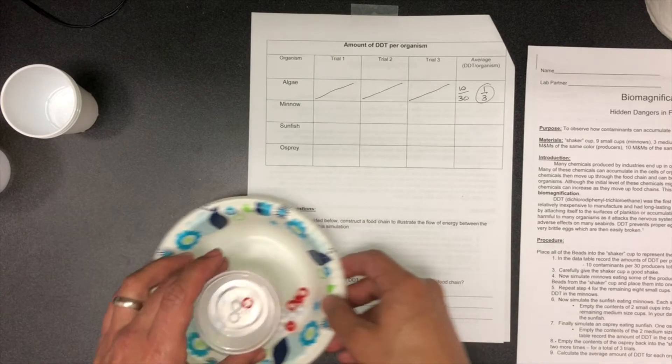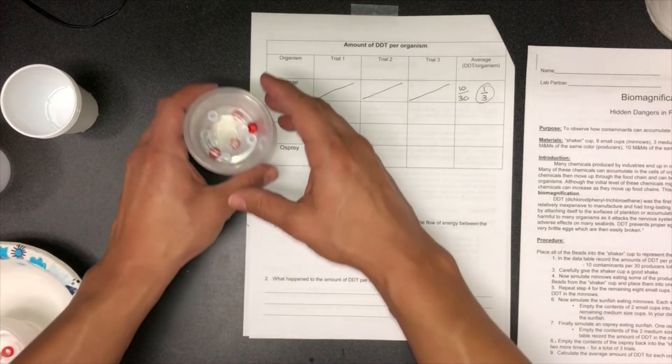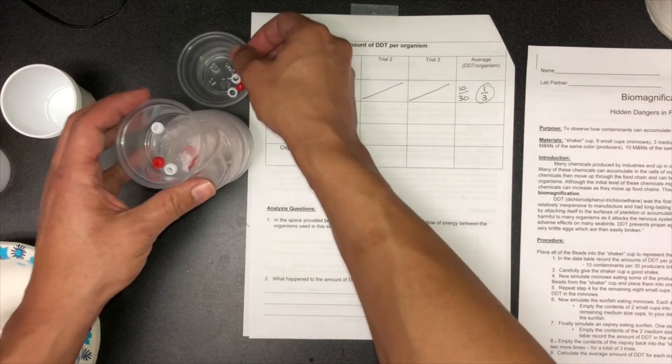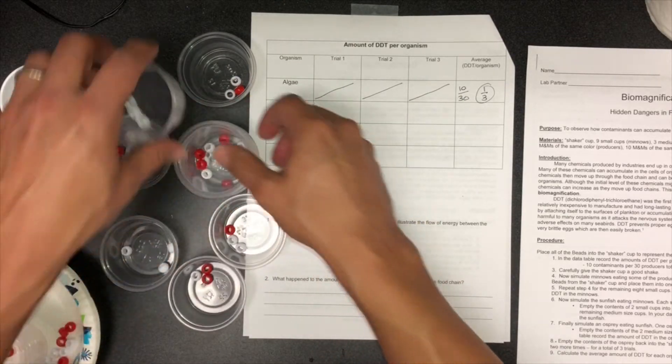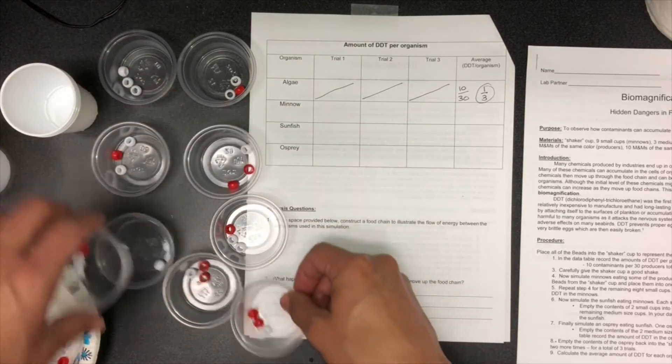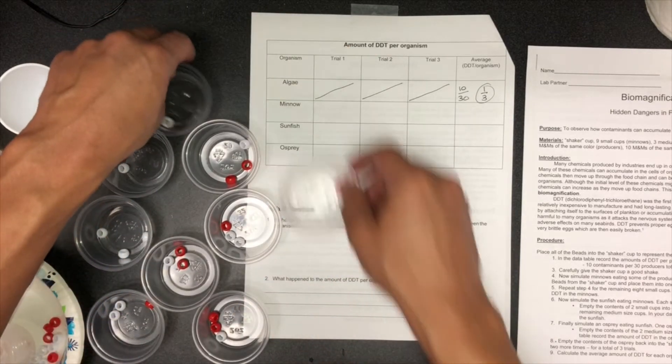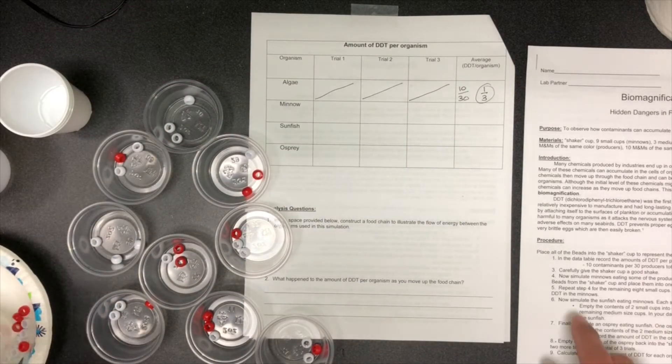You will have some left over, by the way. I went ahead and pre-prepared these for you, so I have nine cups here. These represent the minnows that have eaten algae. As you can see, some of them have eaten DDT algae.